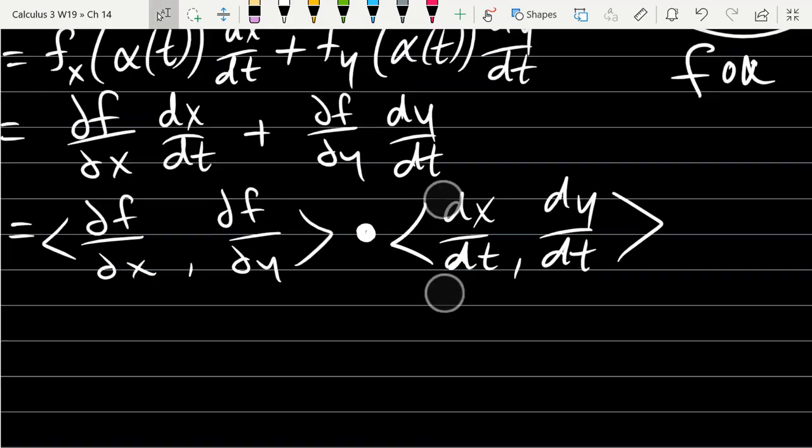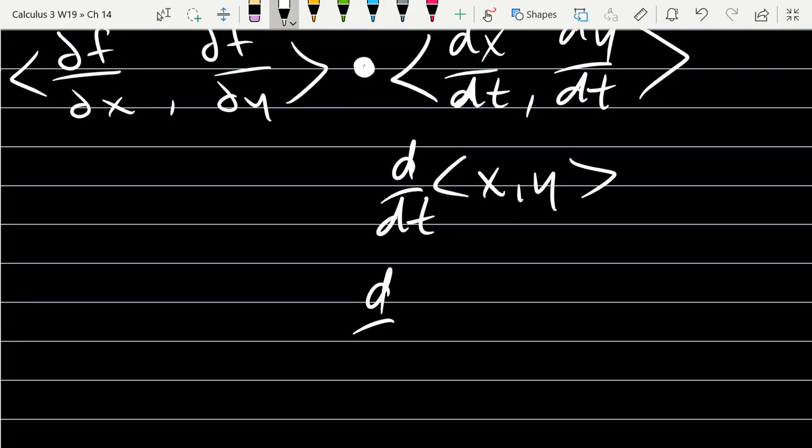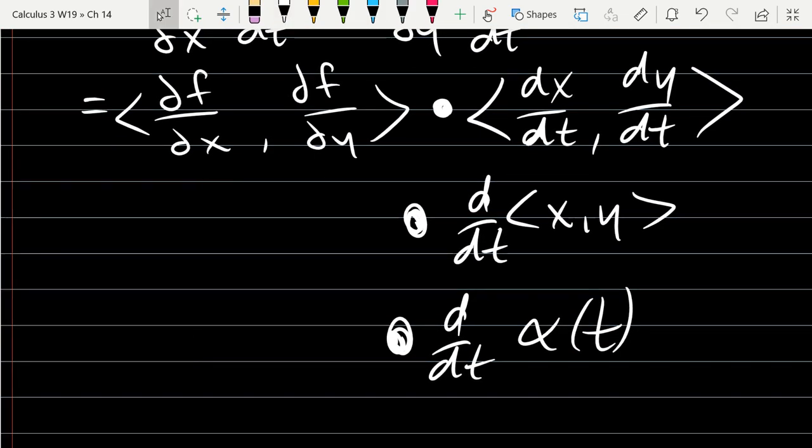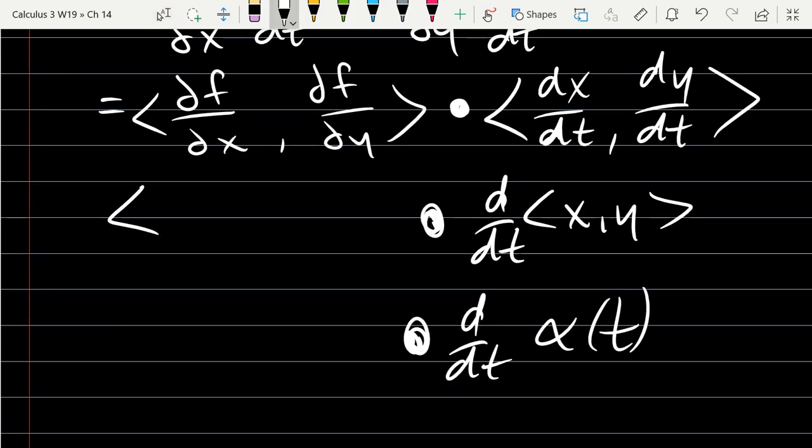All right, the second part, right here, I can rewrite it as d/dt of just the <x(t), y(t)> function, or this is d/dt α(t). That's all we're looking at on the right side there.